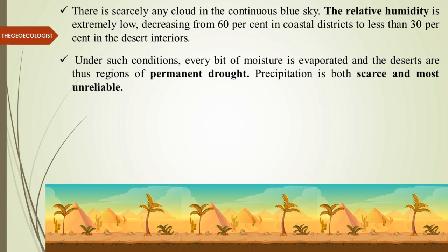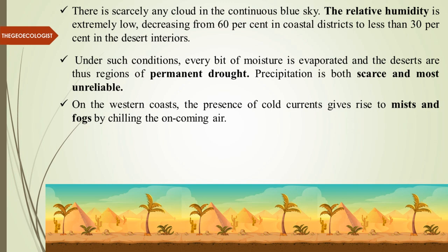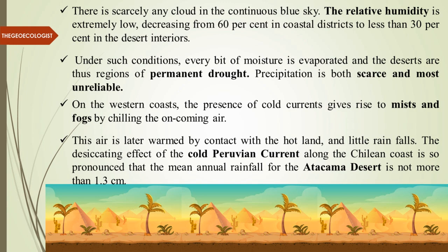Precipitation is scarce and very unreliable. On the western coast, the presence of cold currents gives rise to mist and fog by chilling the oncoming air. The air is later warmed by contact with hot land. The cold Peruvian Current along the Chilean coast in South America is a famous example, which is why mean annual rainfall in the Atacama is less than two centimeters.